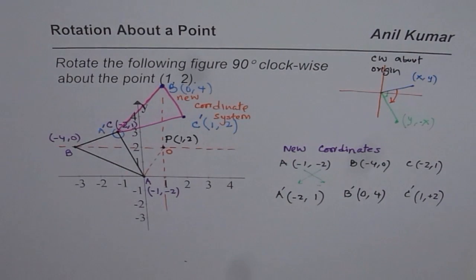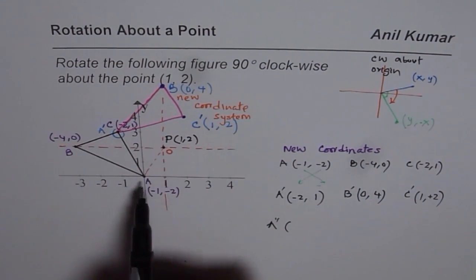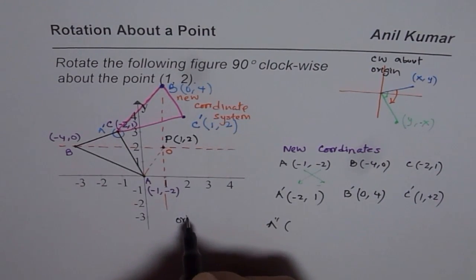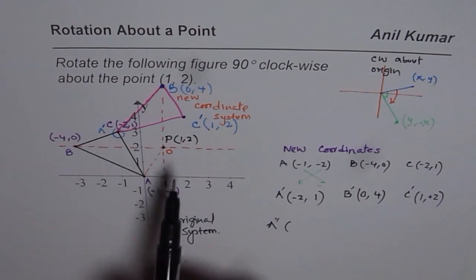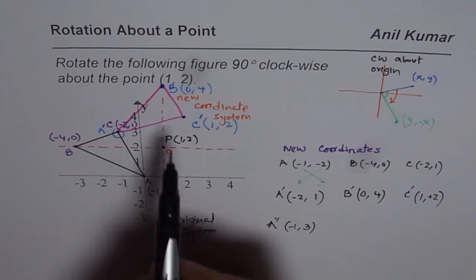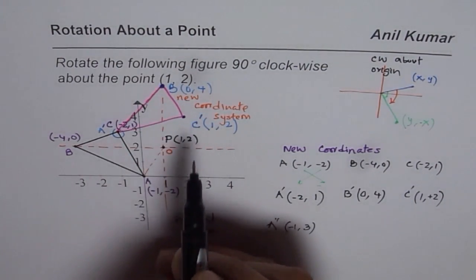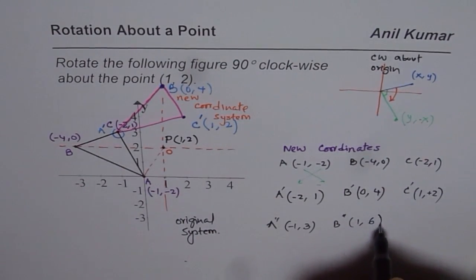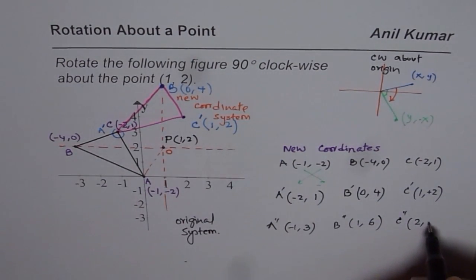I hope these steps help you understand what the coordinates are. Now with reference to the old coordinates, you can read the real values. Going back to the original system: A' is at (-1, 3), B' is at (1, 6), and C' is at (2, 4).